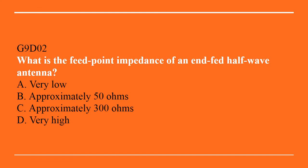G9D02: What is the feed point impedance of an end-fed half-wave antenna? A. Very low. B. Approximately 50 ohms. C. Approximately 300 ohms. Or D. Very high. The answer is D, very high.